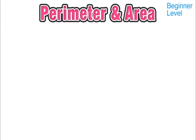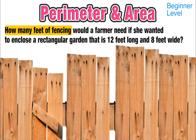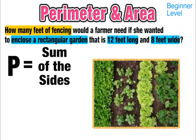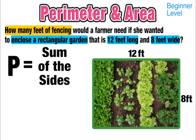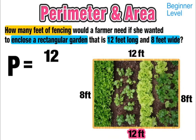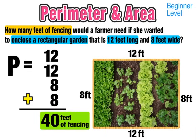Let's apply this to a real-life situation. A farmer wants to enclose a rectangular garden that is 12 feet long and 8 feet wide. Since fencing goes around the outside, this is a perimeter question. Labeling the diagram: length is 12 feet, width is 8 feet, with opposite sides the same. Adding 12 plus 12 plus 8 plus 8 gives a perimeter of 40 feet of fencing.